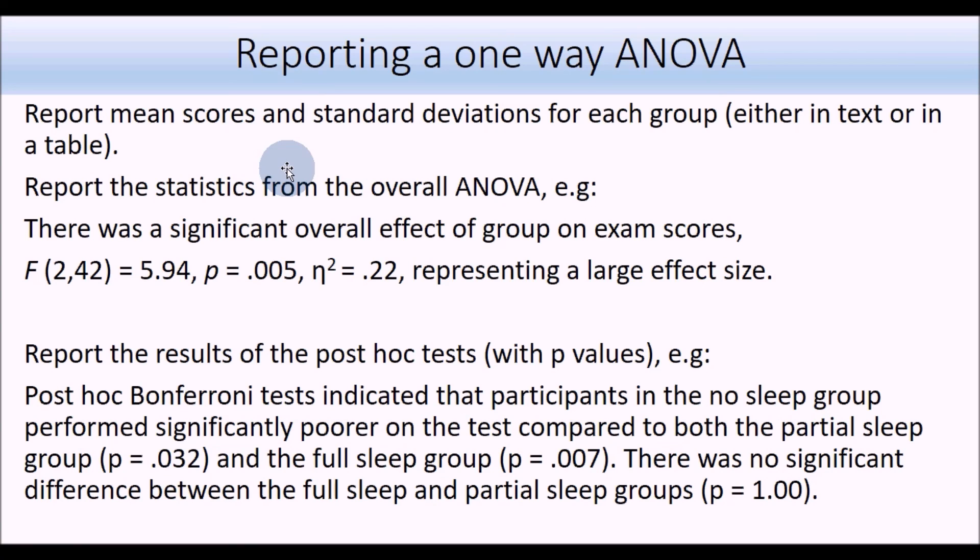Then you can go on to report the post-hoc tests. Quite often for a post-hoc test, it will just be the p-values that are reported. As long as you've got the mean scores somewhere, that's okay. You might also see mean differences reported for post-hoc tests - that's optional. If you've got significant post-hoc tests, just also interpret the direction of the effect. So here, participants in the no sleep group performed significantly poorer on the test compared to both the partial sleep and full sleep groups, but there was no significant difference between the full sleep and partial sleep groups.